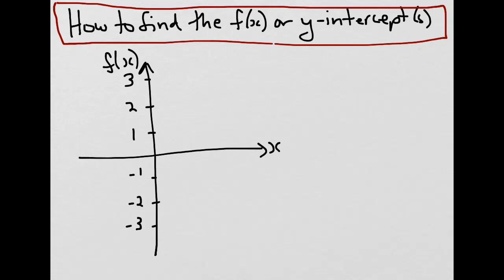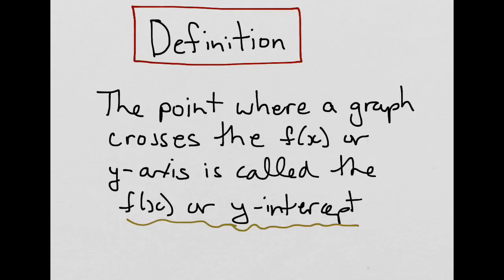In this video, we'll explore how to find the f(x) or y-intercepts of a function. First, let's look at the definition. The point where a graph crosses the f(x) or y-axis is called the f(x) or y-intercept.